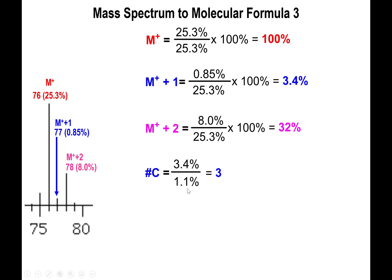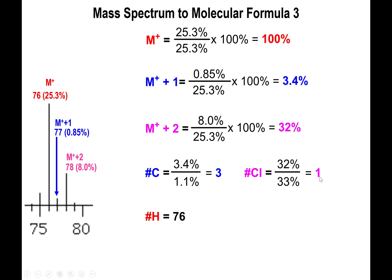For the M+1 peak, we get 3.4%, and dividing by 1.1 tells us there are three carbons. Also, the M+ peak is an even number, indicating an even number of nitrogens — zero counts as even, so the structure may not need nitrogen at all. The M+2 value near 33% confirms one chlorine atom. We subtract three carbons (3×12=36) and one chlorine (35) from the total mass of 76.